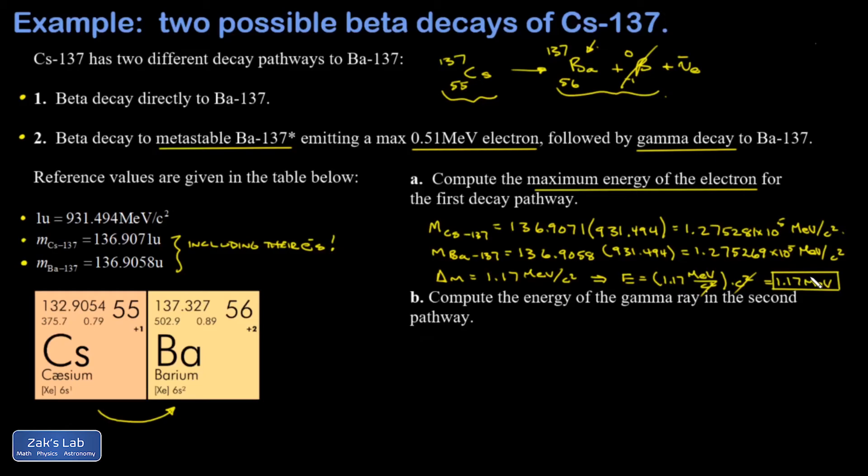So that's the total energy released as we go from cesium-137 to barium-137. In the second pathway, we emit an electron with an energy of 0.51 MeV. It leaves some energy left over in the excited state of the nucleus, and then it decays down to its ground state and emits a photon carrying away that extra energy.